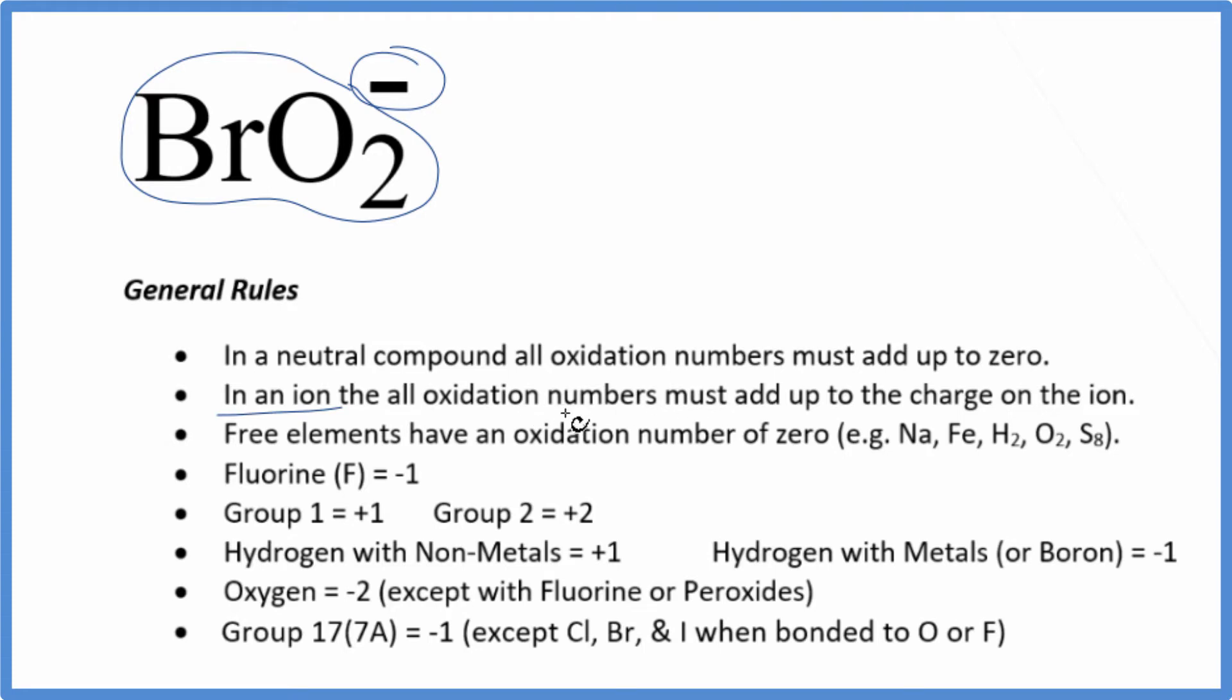In an ion, all the oxidation numbers are going to add up to the charge on the ion. So all of the oxidation numbers on the bromine and the two oxygens are going to equal minus one.